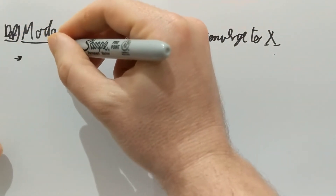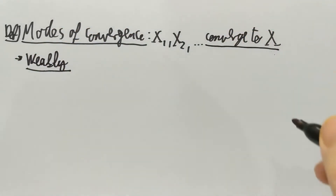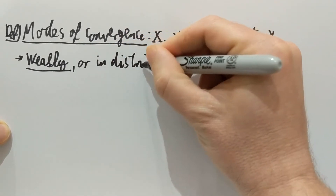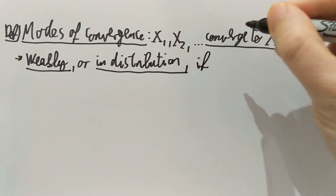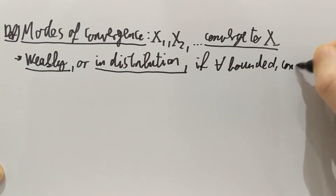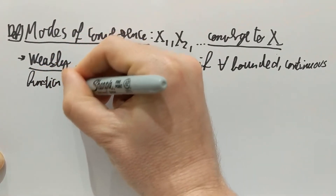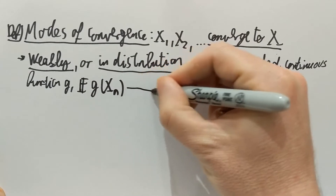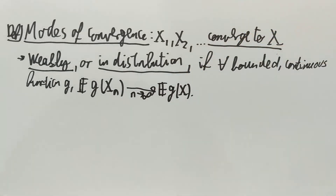The first way to do this is called weakly. So we have convergence to x weakly — we say there's convergence weakly, or equivalently in distribution. If the following happens: for every bounded and continuous function g, we have that the expectations E[g(x_n)], as numbers (these are not random anymore), converge as n goes to infinity to the expectation of g(x). That's the first definition.